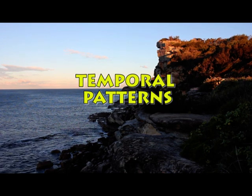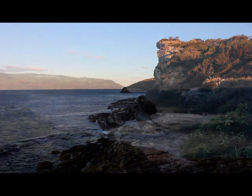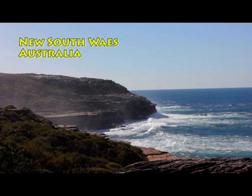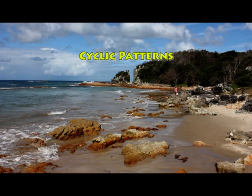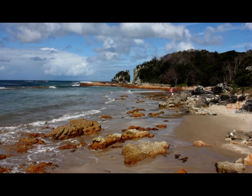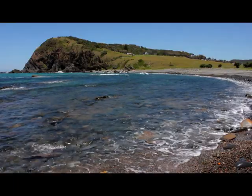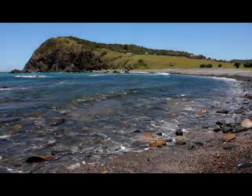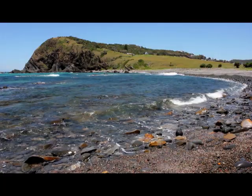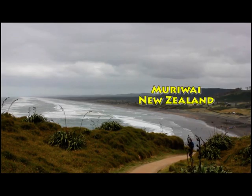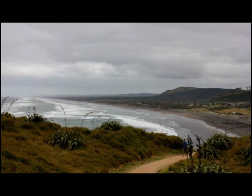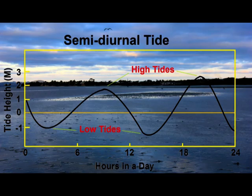Temporal patterns are about how things change over time. Take for example the temporal variations that can occur with coastal processes. At beaches around the world there are temporal patterns that are both regular and cyclic. Every day there is a cyclic pattern of swash and backwash. There are also cyclic patterns of tides — for example, at Muriwai, New Zealand, the tide has a semi-diurnal pattern, meaning two high tides and two low tides every day.